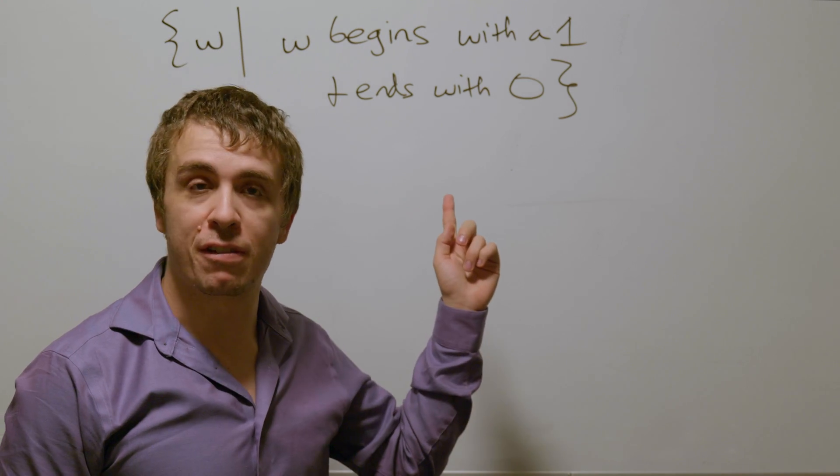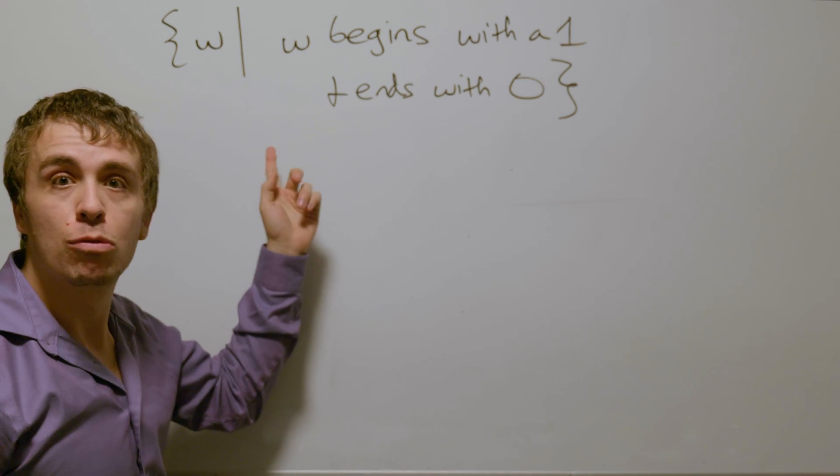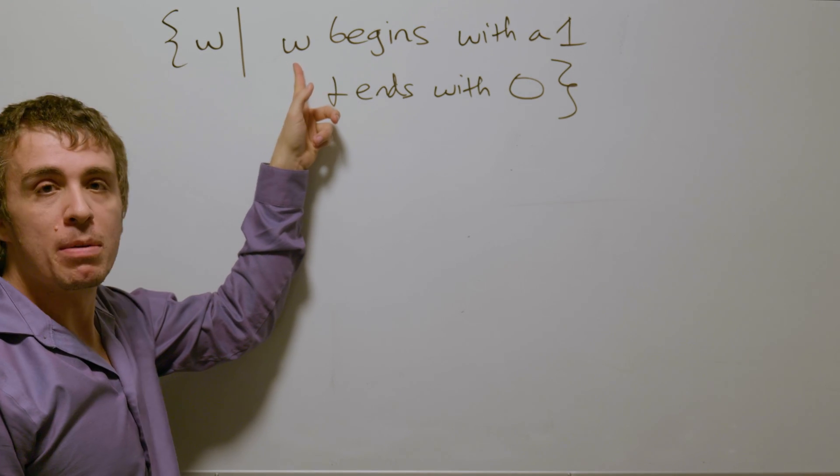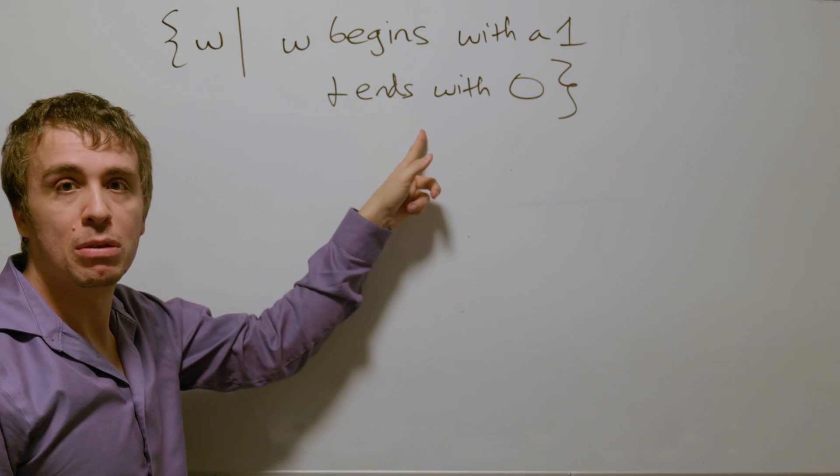Okay, so let's make a deterministic finite automaton for this language, which is the set of all binary strings w, such that w begins with a one and ends with a zero.